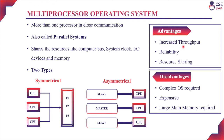The advantages are increased throughput — since more than one processor is available for execution, we can execute more number of jobs — and high reliability, because if any one processor fails, the remaining processors will be available for execution. Also, the resources will be shared among the processors. The disadvantages: a complex operating system is required since it has to deal with more number of processors, and this kind of operating system is expensive to implement. In case of symmetrical multiprocessing, the processors share the memory, so it requires large main memory.